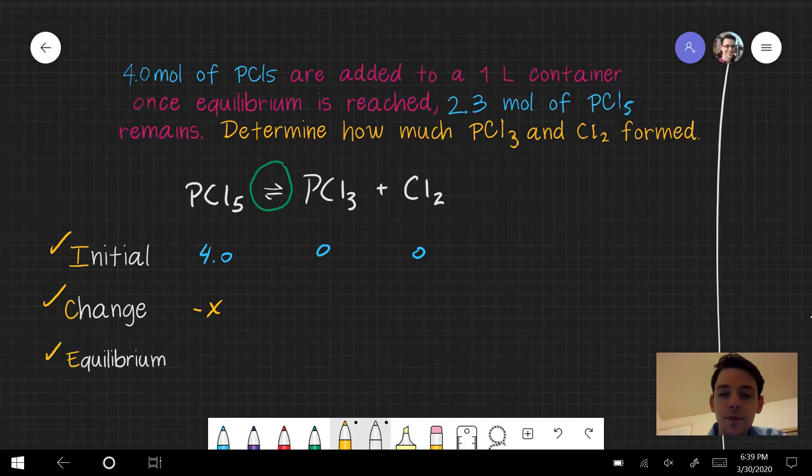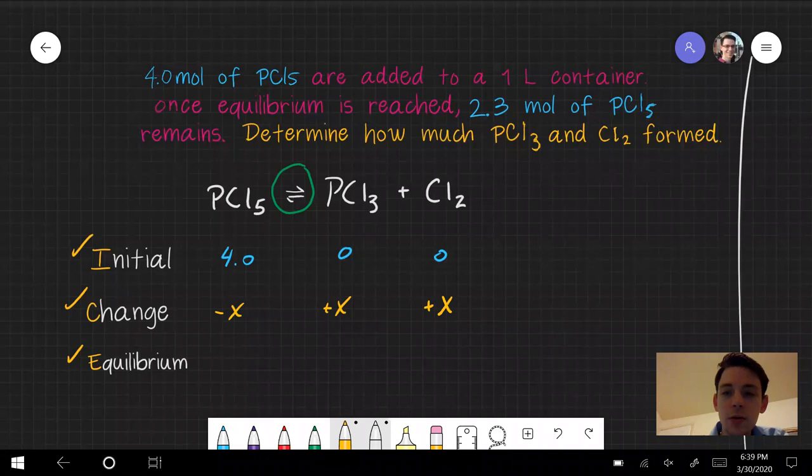So if I were to react x PCl5, how much PCl3 would I produce? I would produce x PCl3 and x Cl2. Again, 1 to 1 to 1 ratio, or x to x to x ratio.